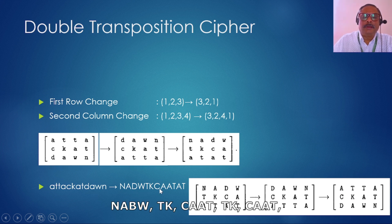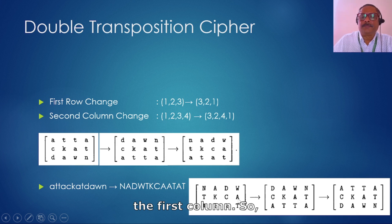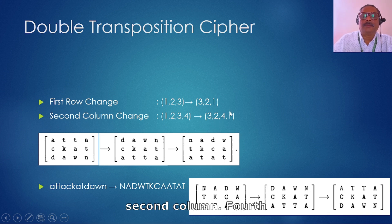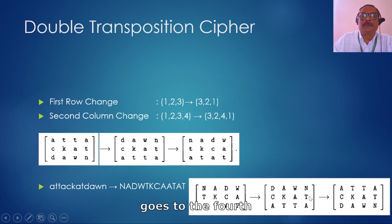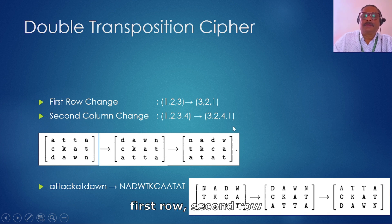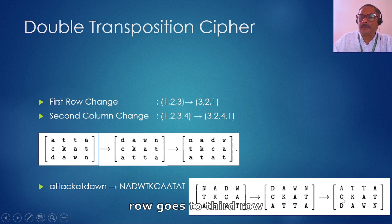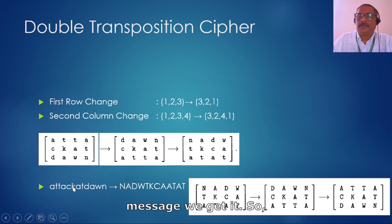To decrypt it, we reverse the same order. Starting from 'NADW TKCA ATAT,' the third column comes back to the first column, the second column remains in the second column, the fourth column comes to the third column, and the first column goes to the fourth column. Then the third row becomes the first row, the second row remains the second row, and the first row goes to the third row. Reading the result gives us 'attack at dawn' — the original message.